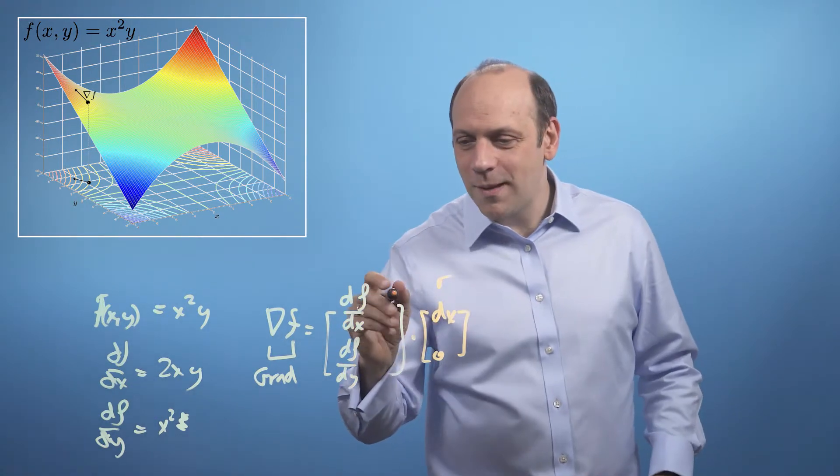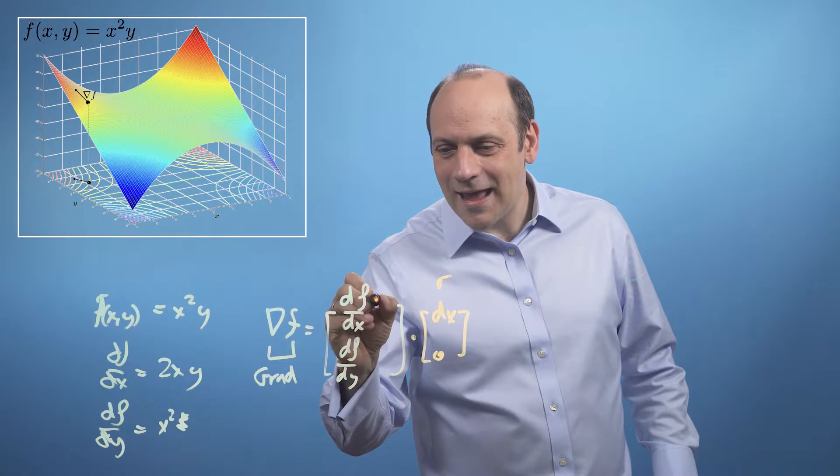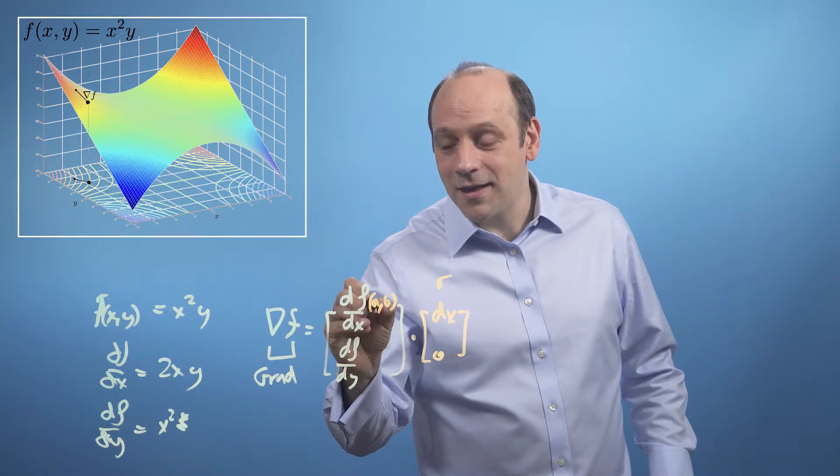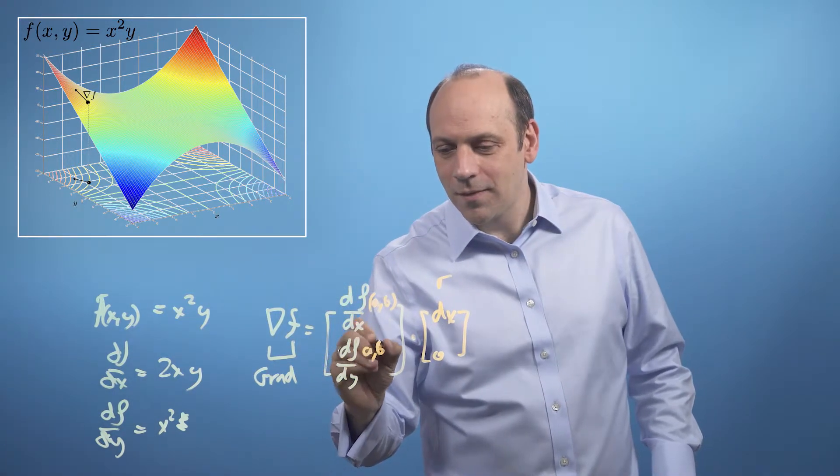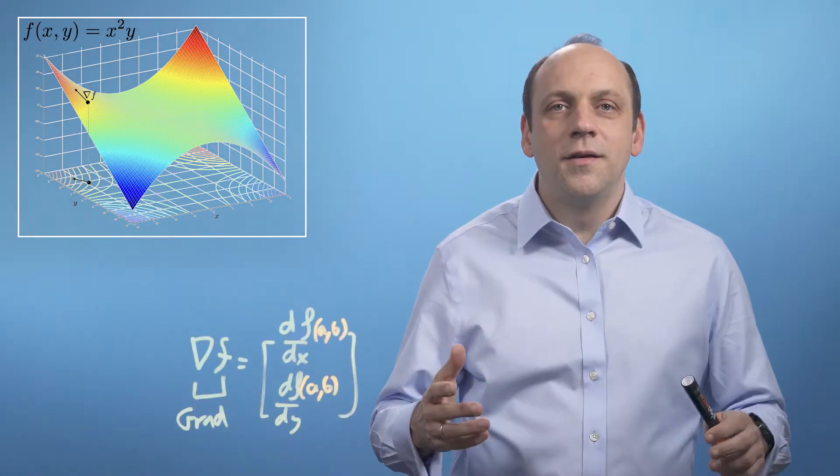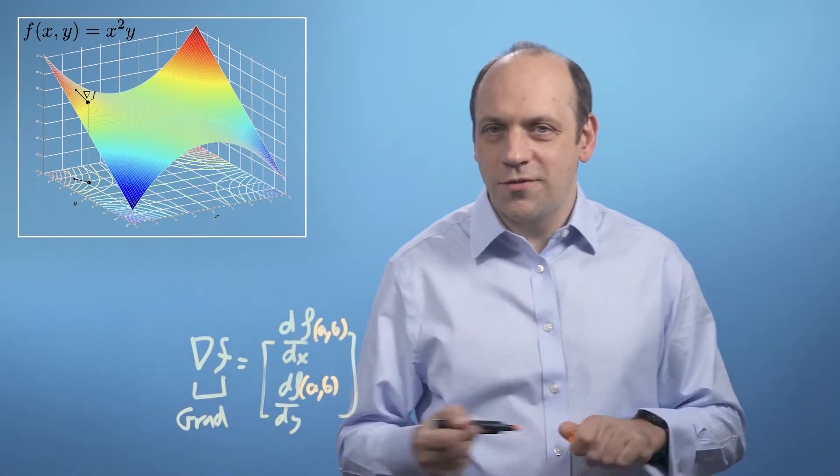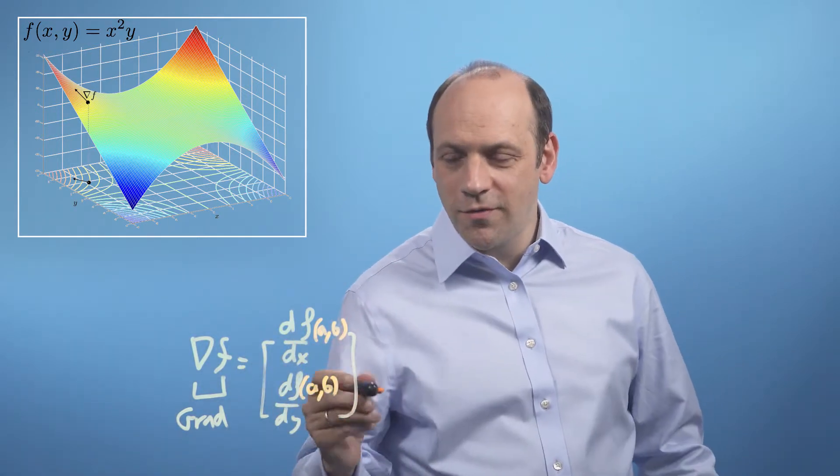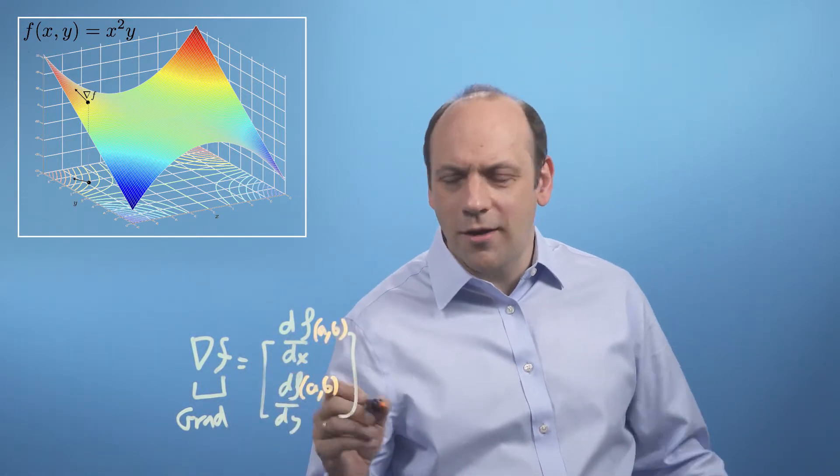And the important thing is to remember this is evaluated at f has some values in the space, a, b. So it's evaluated at a location. So then if we want to know how much the function will change when we move along some unit vector in an arbitrary direction, we'll call that unit vector r hat and we'll give it components c and d.